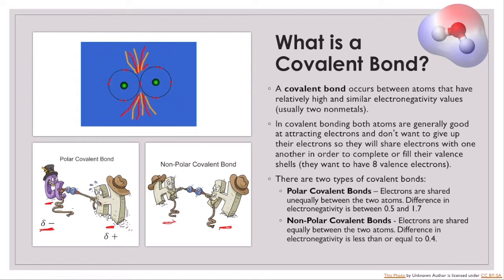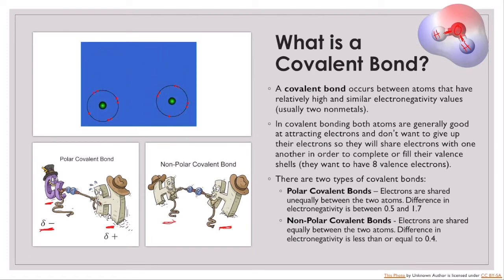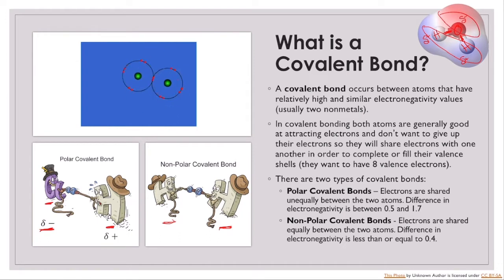Water is a polar substance, held together using covalent bonds between the hydrogens and the oxygen. Water has two hydrogen atoms and one oxygen atom, with one shared pair of electrons between each hydrogen and the oxygen. Oxygen is more electronegative, so it's hogging those shared electron pairs, giving oxygen a partial negative charge and each hydrogen a partial positive charge. The water molecule itself has a positive side and a negative side, making it a polar molecule.